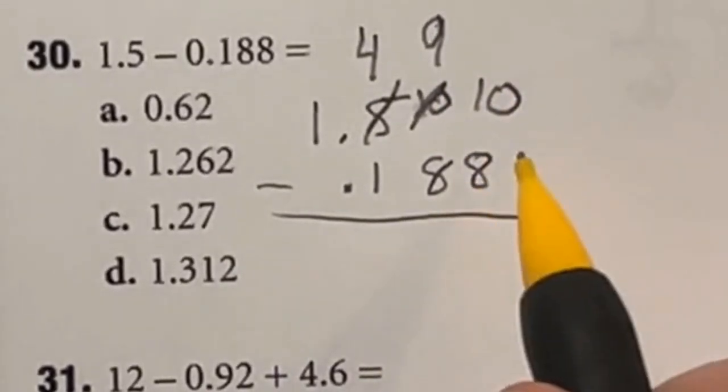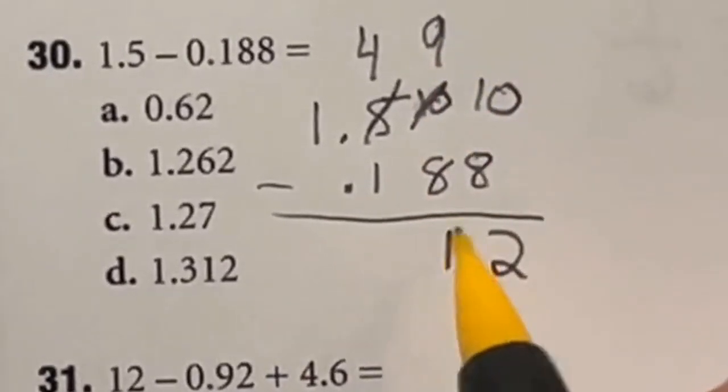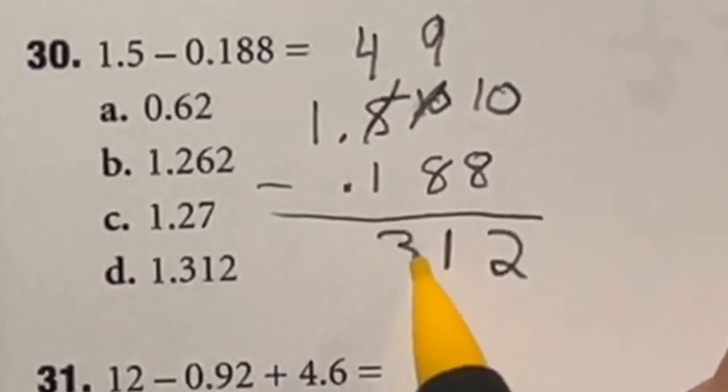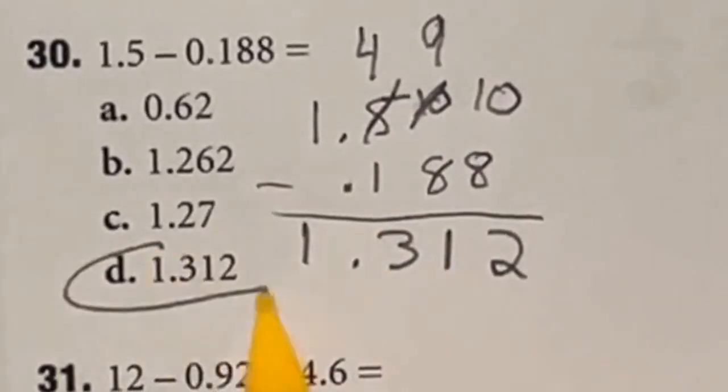Now that we have our numbers, we can just subtract straight down. 10 minus 8 is going to give me 2. 9 minus 8 gives me 1. 4 minus 1 gives me 3. And we still have that 1 out front, giving us a final answer of D.